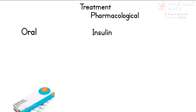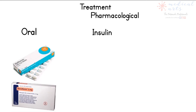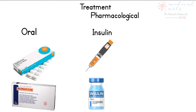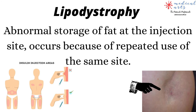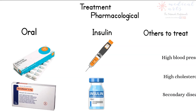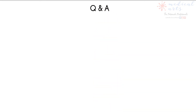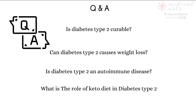Oral antidiabetics assist in increasing insulin secretion by the pancreas, while some other drugs facilitate the use of this hormone by the cells. Insulin is regarded as the most effective treatment of diabetes. However, some side effects come along with this treatment, such as hypoglycemia and a skin condition called lipodystrophy. Other groups of medications are used to decrease and control the complications that are often associated with diabetes.